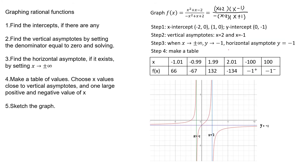In summary, here are the steps to graph a rational function: first, find the intercepts; second, find the vertical asymptote by setting the denominator equal to zero; third, find the horizontal asymptote by letting x approach positive or negative infinity; fourth, make a table of values to be more precise; and finally, sketch the shape of the graph.